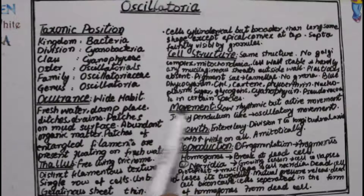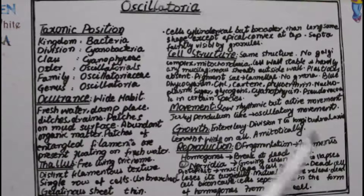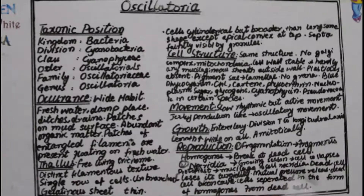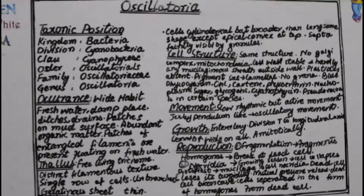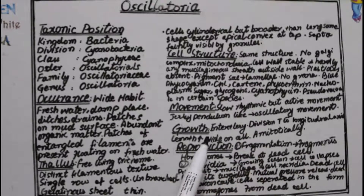Oscillatoria has a slow rhythmic movement. It is a slightly active but slow, rhythmic movement — just like a jerky pendulum. This movement is also known as oscillatory movement, which is actually the origin of the name 'Oscillatoria.'